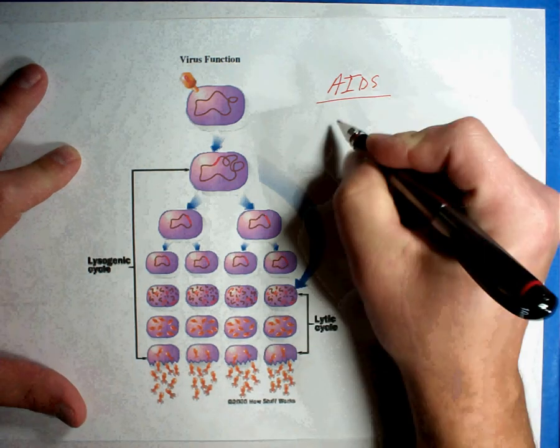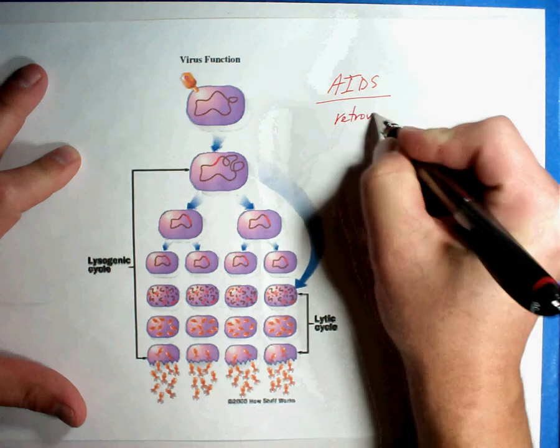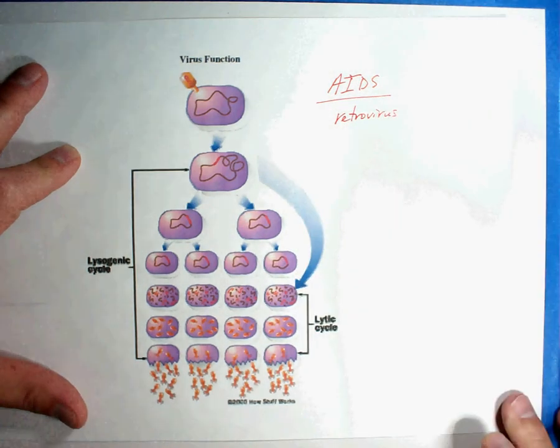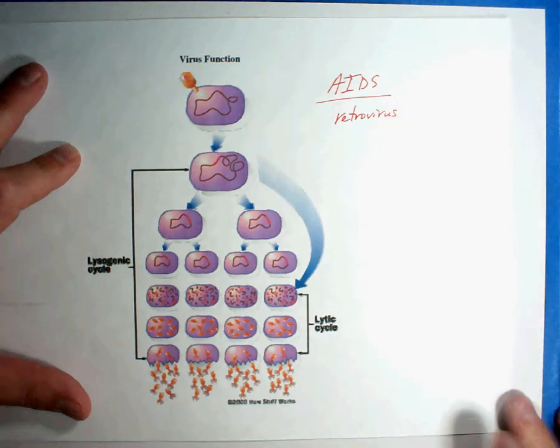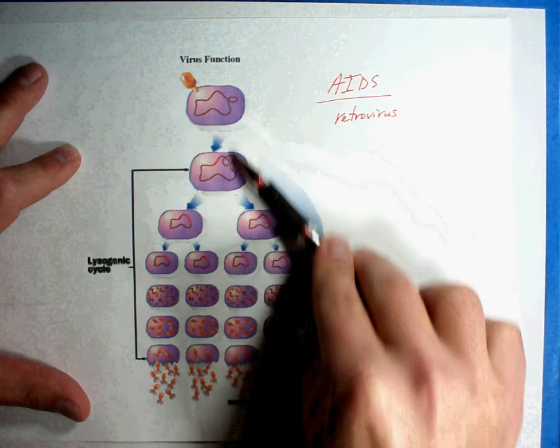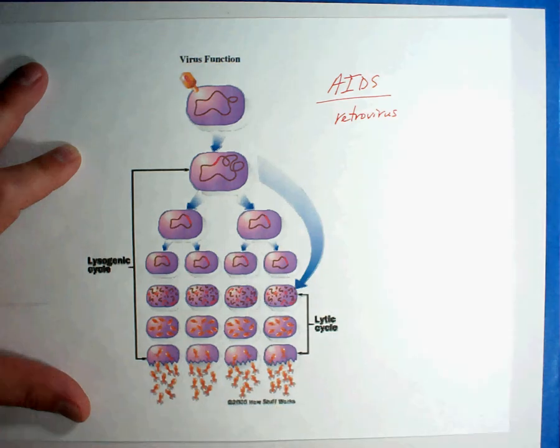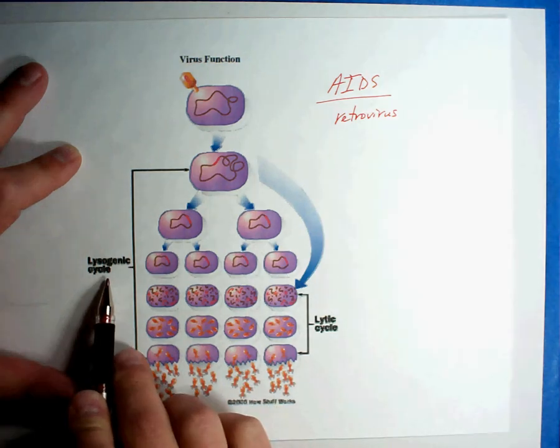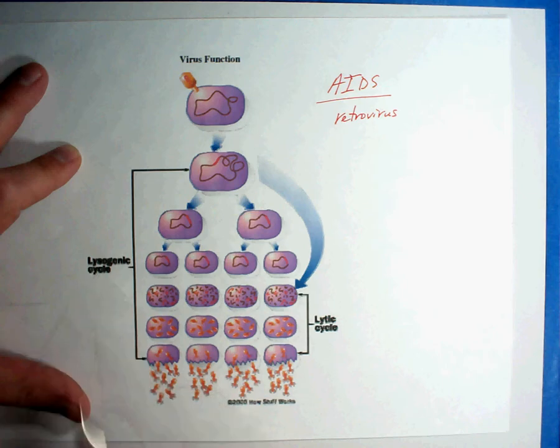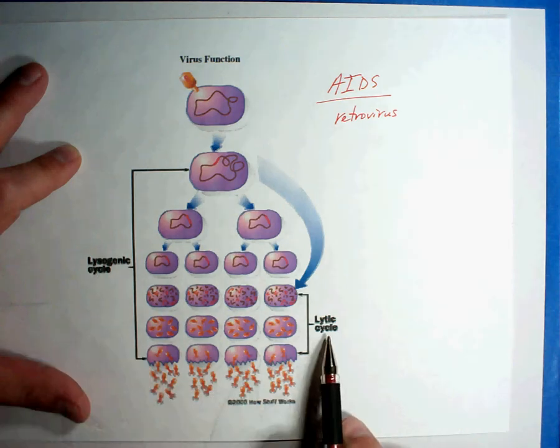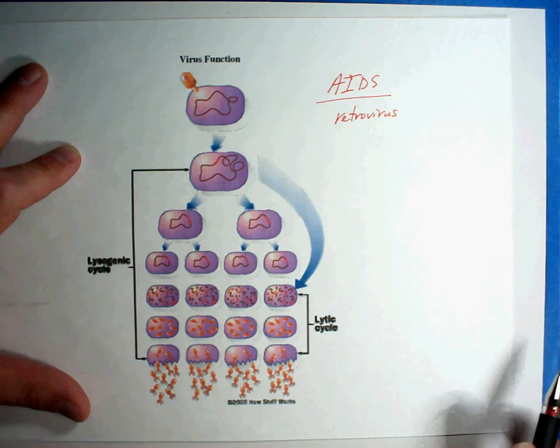First, the AIDS virus is what is called a retrovirus. Now there are different kinds of viruses and it basically works in the same format as we were learning basic viruses with the lysogenic cycle where it's just stuck in the DNA and then the lytic cycle in which it starts going to work taking over the cell.